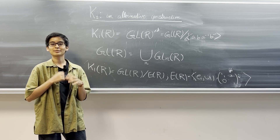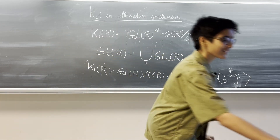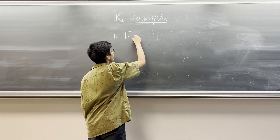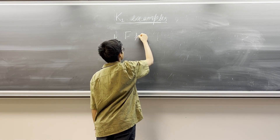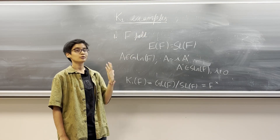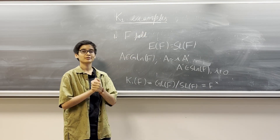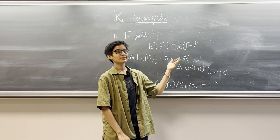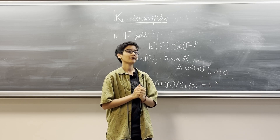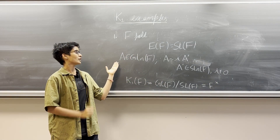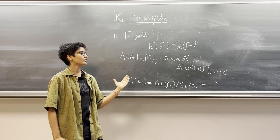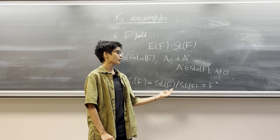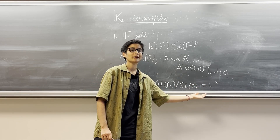Let us use this construction to compute some examples of K1. The first example is when F is a field. In this case, due to Gaussian elimination, we know that the elementary matrices with coefficients in F actually generate the whole special linear subgroup of F. That is, E of F generates all matrices that are invertible and have determinant 1 and coefficients in F. We also know that if we have an element A in GL_n of F, then A differs from a special linear matrix by a non-zero scalar. So in this case K1 of the field F would be GL of F quotiented by SL of F, which gives us the invertible elements in the field F.